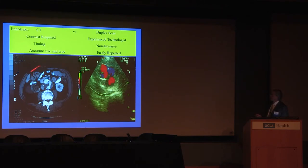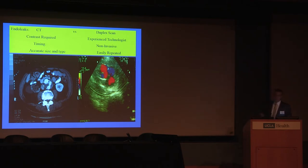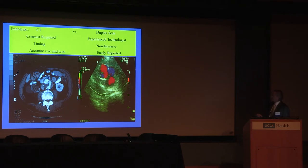Usually what we do to follow up these patients is to get a CT scan. In our institution, once we have a patient without an endoleak and an aneurysm that's stable, we tend to follow them with duplex ultrasound scans. You can actually see the endoleak with a duplex scan, and the advantage is that it's easily repeated and non-invasive.